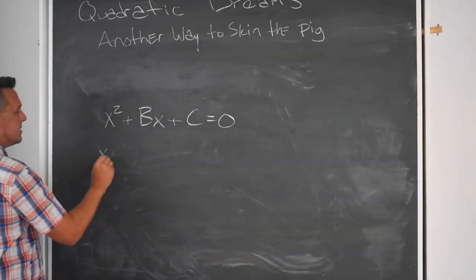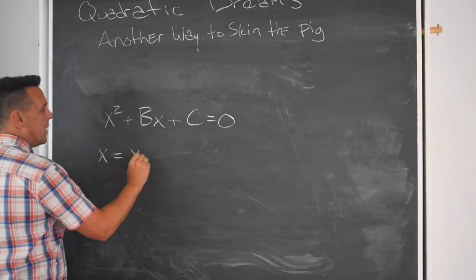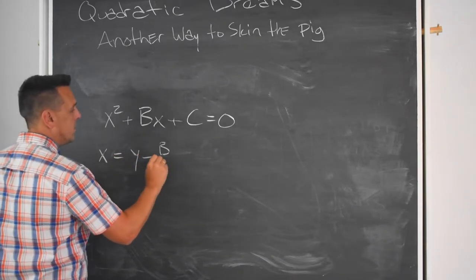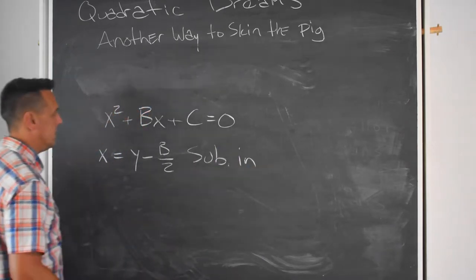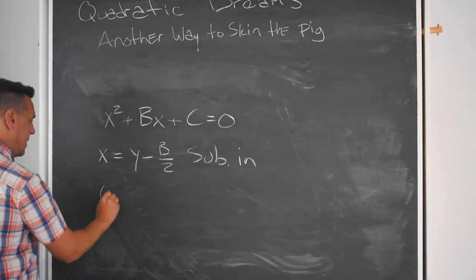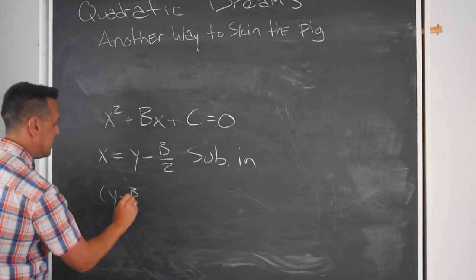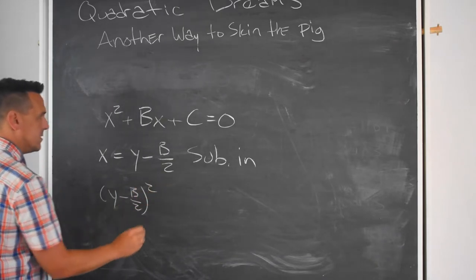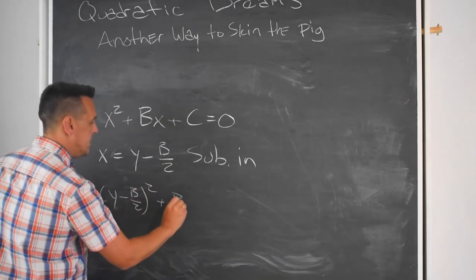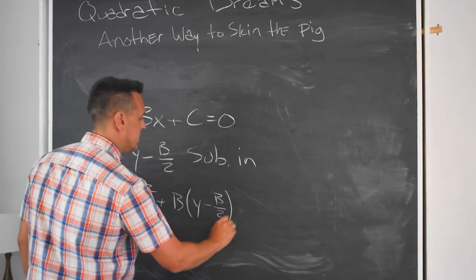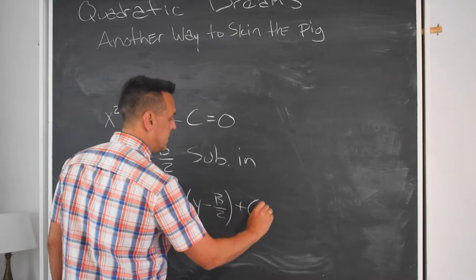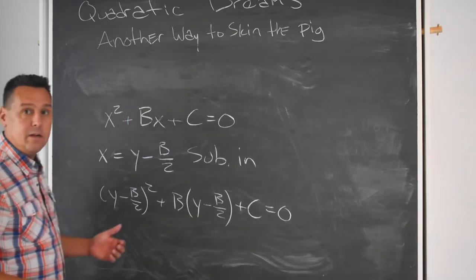So instead of x in this equation, I'm going to write y minus b over 2, and I'm going to substitute this in. So instead of x squared, I'm going to write y minus b over 2, and all of that squared, plus b times y minus b over 2, plus c equals 0.